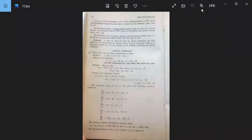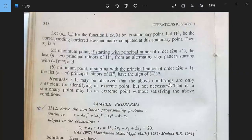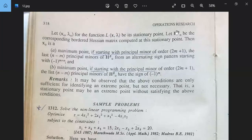Let us see what conditions are. Let (x_0, lambda_0) for the function L(x, lambda) be its stationary point, and let H^b_0 be the corresponding bordered Hessian matrix evaluated at (x_0, lambda_0) at this stationary point. Then x_0 is part a or b. First, maximum point x_0.